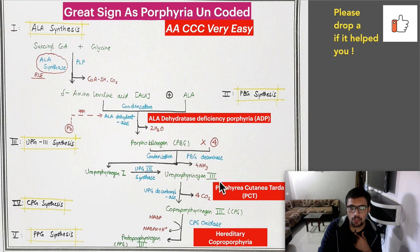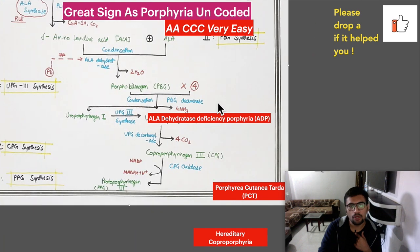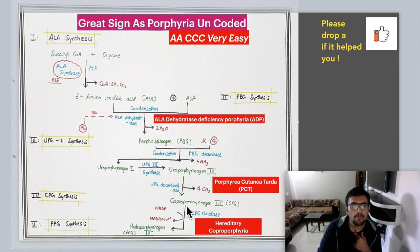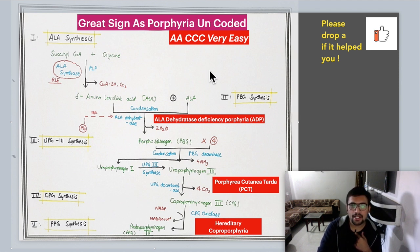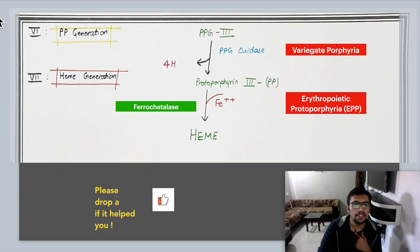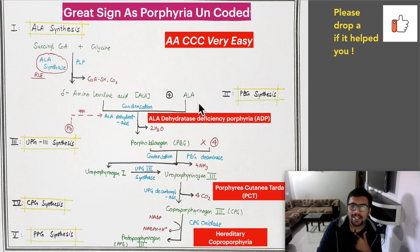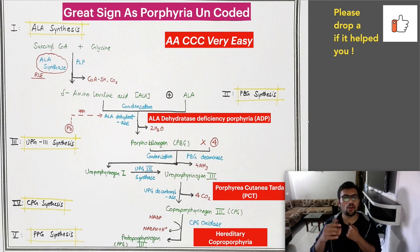Coming to the next step in the pathway: between this, if you have enzyme deficiency (uroporphyrinogen decarboxylase), the porphyria is PCT — porphyria cutanea tarda — our second C. Then in the last step, deficiency in CPO (coproporphyrinogen oxidase) manifests as hereditary coproporphyria — our third C. We are then left with two reactions: variegate porphyria due to PPO (protoporphyrinogen oxidase) deficiency, and erythropoietic protoporphyria due to ferrochelatase deficiency.